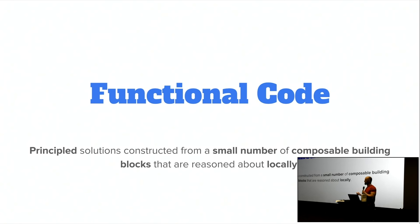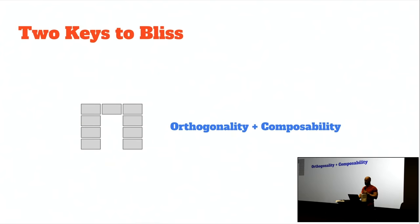That gives you a certain fearlessness you can't find in procedural programming — the ability to look at those types, make a change, and know something about what's going to happen. For someone who's worked in very large projects, this level of principled software development can be life-changing. But not all functional code is created equal. There is such a thing as bad functional code, and I still prefer bad functional code over good procedural code because of local reasoning and referential transparency.